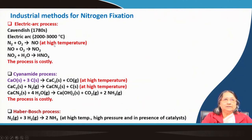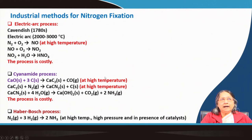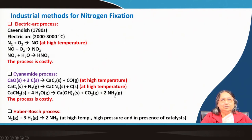In the cyanamide process: calcium oxide solid plus carbon at high temperature forms calcium carbide and carbon monoxide. This calcium carbide reacts with nitrogen — nitrogen in zero state — to form calcium cyanamide. Calcium cyanamide then reacts with water to produce calcium hydroxide, carbon dioxide, and ammonia. So nitrogen is converted to ammonia. This method is also costly because high temperatures are required.